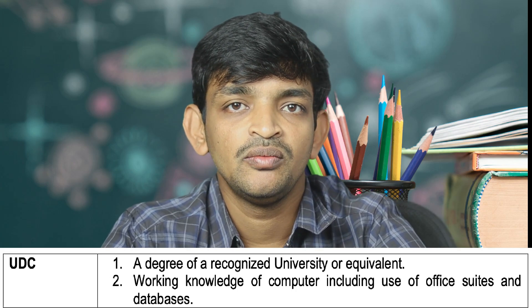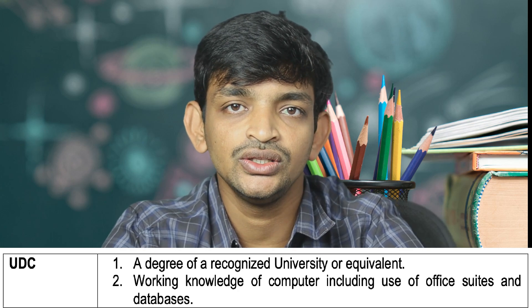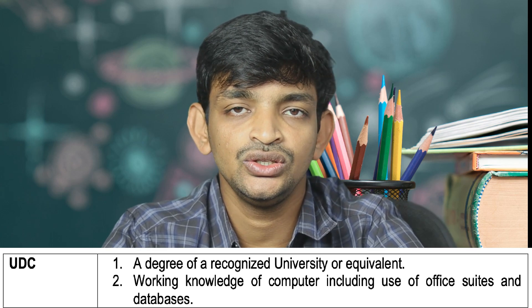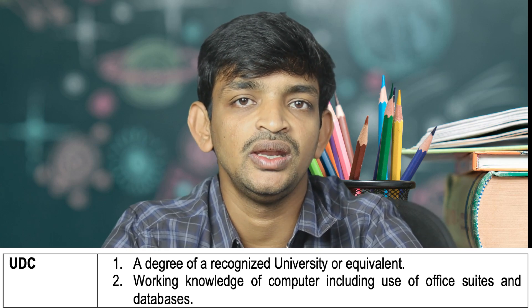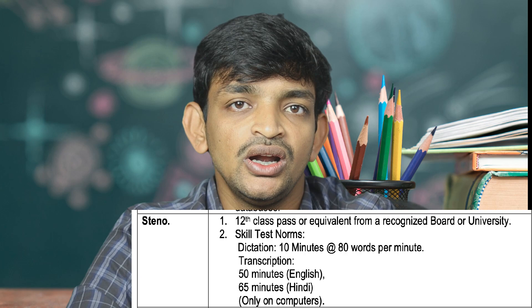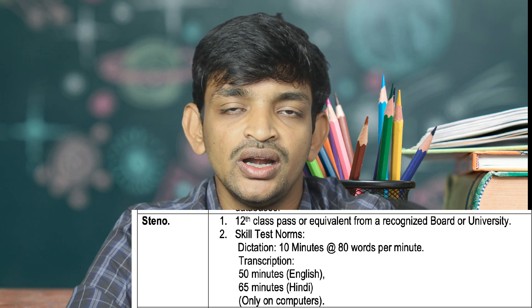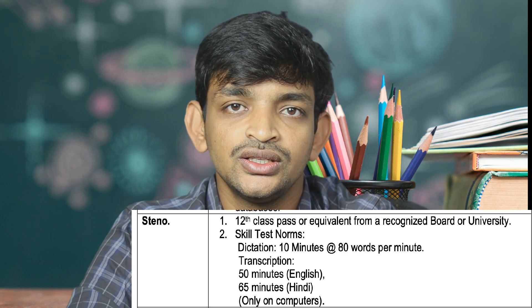Let's go through the education qualifications step by step. First, for Upper Division Clerk — if you apply for this post, you need any degree qualification. Next, for Stenographer — this post requires an intermediate qualification. You should also have skills in dictation, shorthand, and transcription.